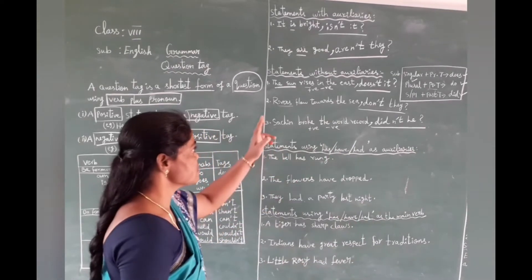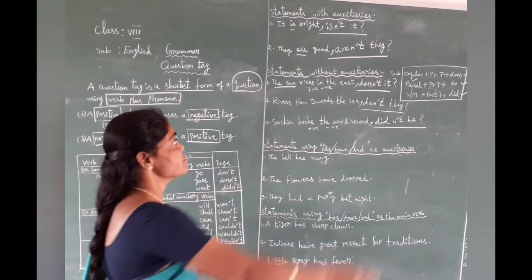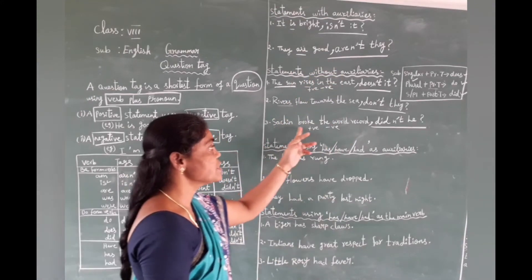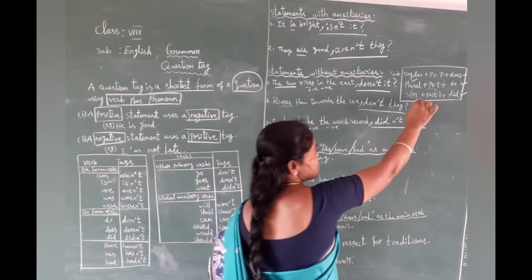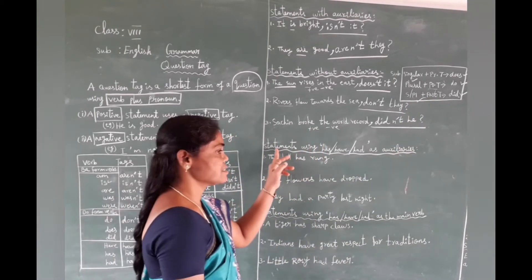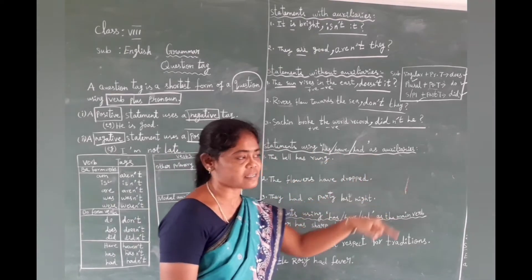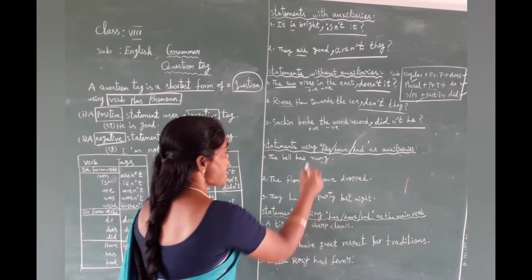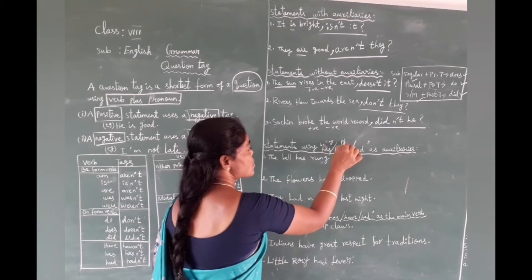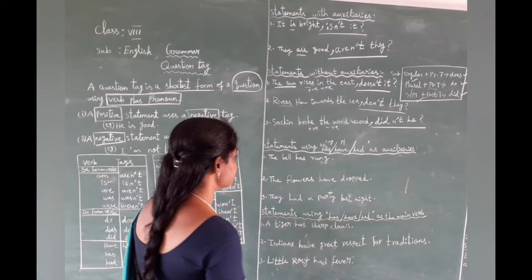So far we have seen statements with auxiliaries and statements without auxiliaries. Now we come to statements using 'has', 'have', and 'had' as auxiliaries. 'Has' is used for singular subjects, 'have' is used for plural subjects, and 'had' is used for past tense regardless of singular or plural. Let us see some examples.